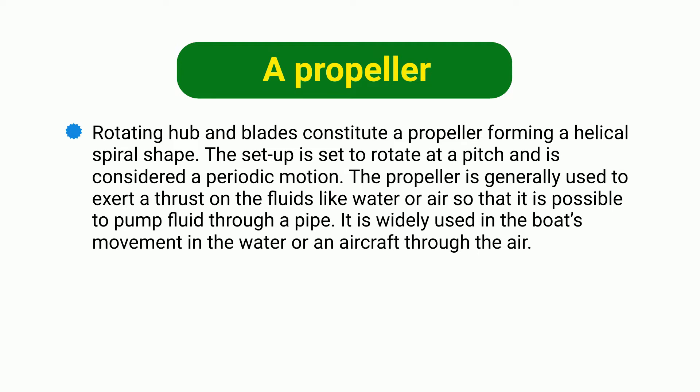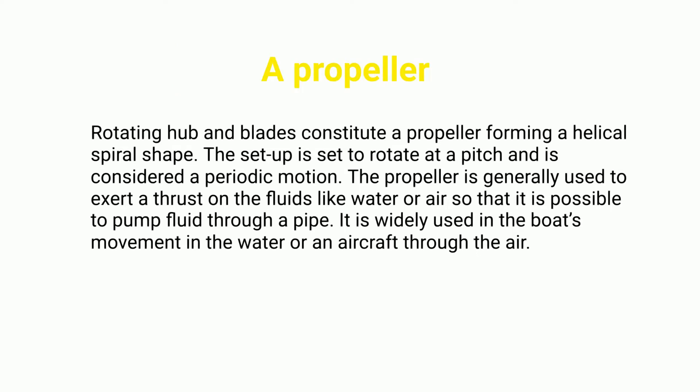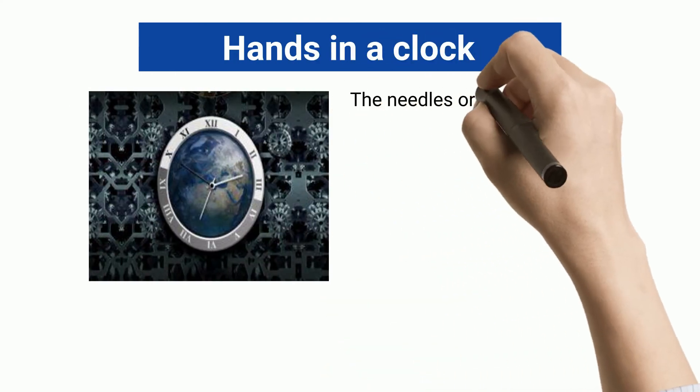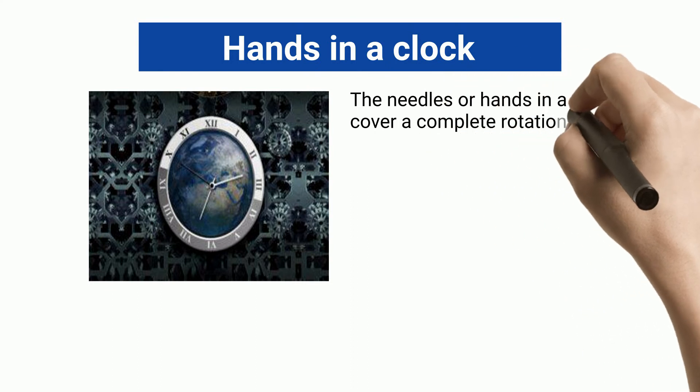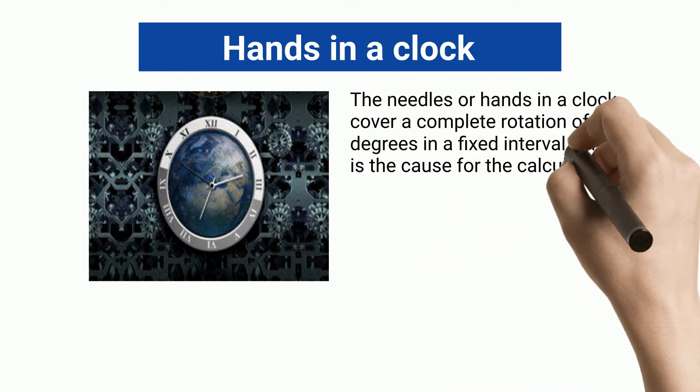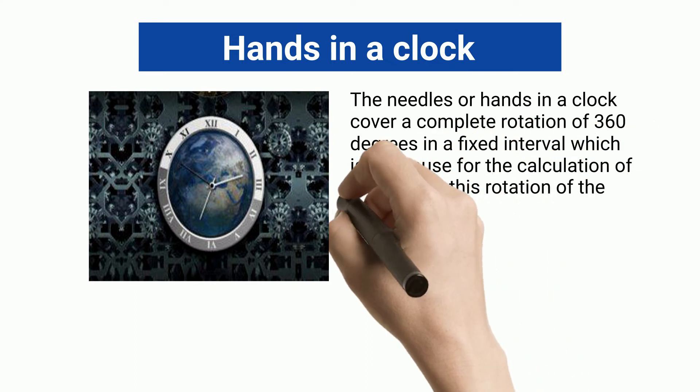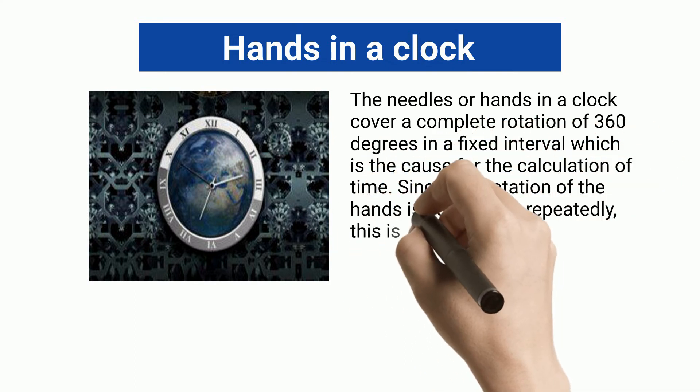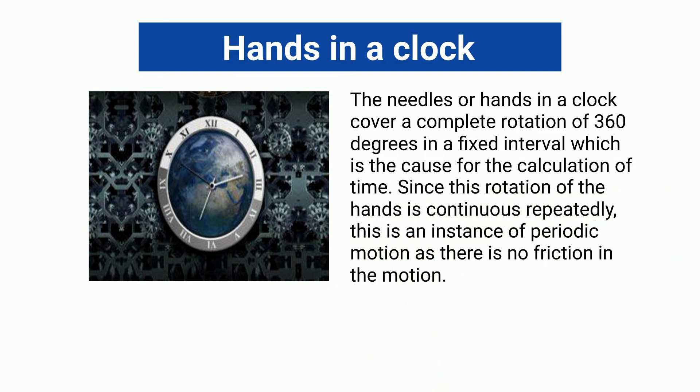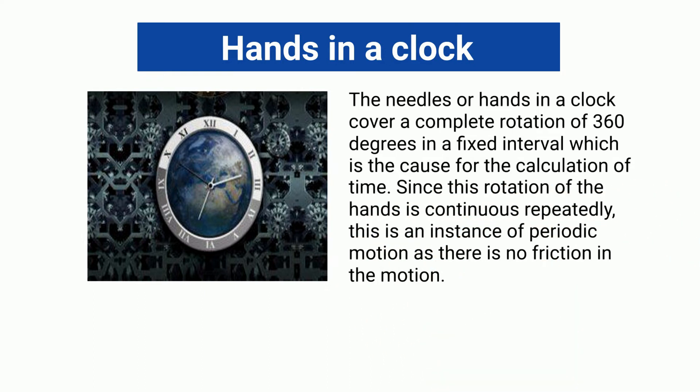Hands in a clock: The needles or hands in a clock cover a complete rotation of 360 degrees in a fixed interval which is the cause for the calculation of time. Since this rotation of the hands is continuous and repeated, this is an instance of periodic motion as there is no friction in the motion.